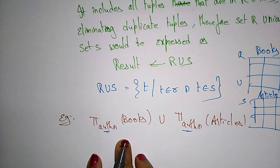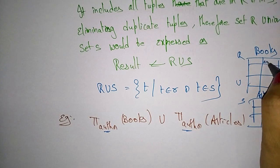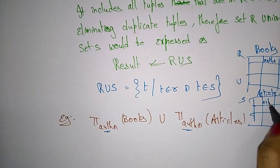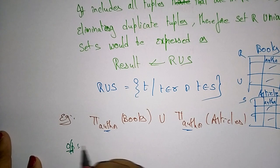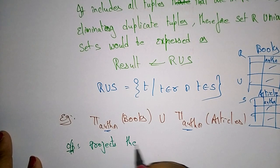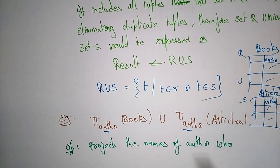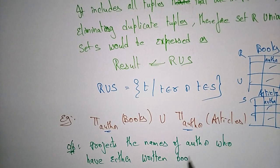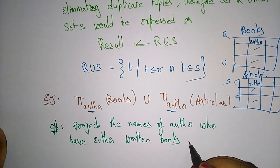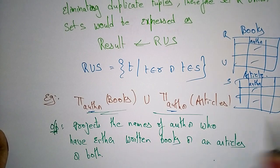We select the tuples using pi_author(Books) and pi_author(Articles). Author is one attribute in Books and also an attribute in Articles. So we select rows present in Books as well as Articles. The output projects the names of authors who have either written books, articles, or both.